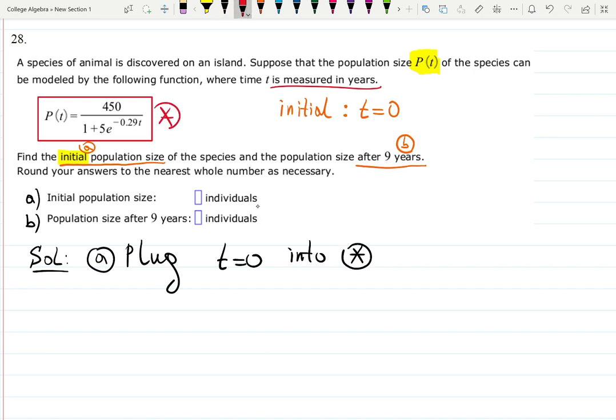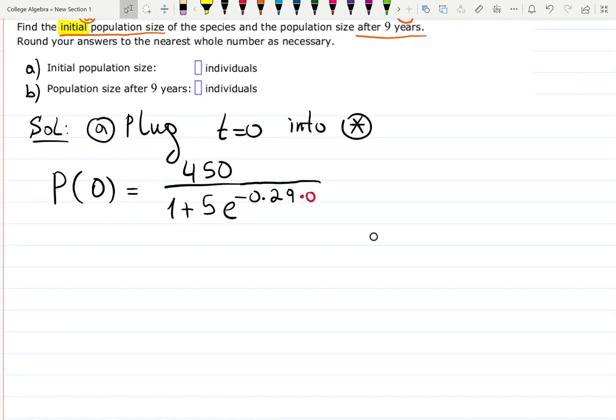P at zero becomes 450 all over 1 plus 5e to the minus 0.29 times zero. And guess what times zero over here. This is all in denominator. So then we need to review. First let's finish the calculations. It's going to be 450 over 1 plus 5e to the zero because zero times negative 0.29 is zero. Make sure you remember the properties of exponential function. a to the zero is what? One.